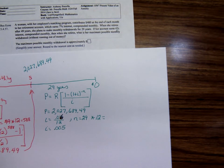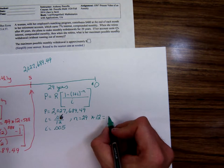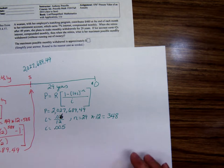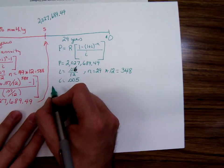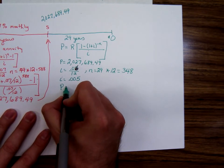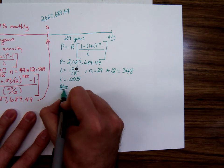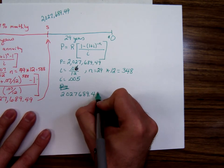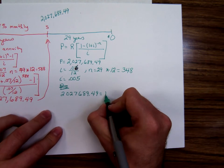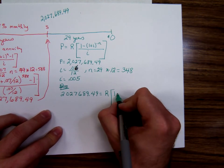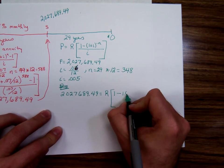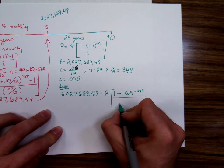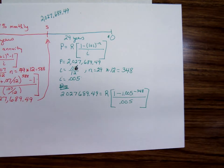Let's see. 29 times 12. Well, that would be 30 times 12 minus 12. 360. Excuse me, 348. 360 minus 12. So now plug it in. P equals 2,027,689.49 equals R times [1 - 1.005^(-348)] all over i. The 1 plus i I can just add in my head. 1.005 to the negative n all over i.